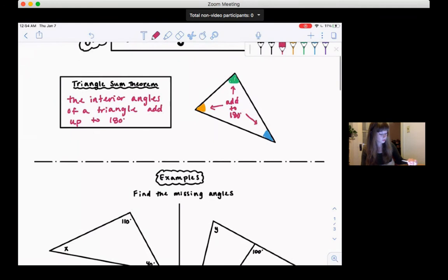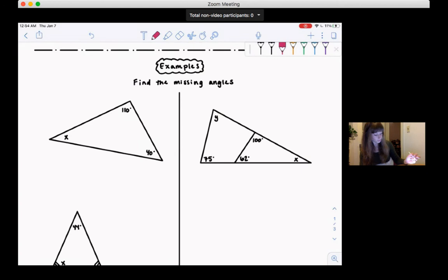Okay, so that's a pretty simple fact. We're going to use that to do a couple examples. So we're going to find the missing angles. This first one, we have a triangle. We're given two of the angles, and we want to find the third angle. So we're going to use the Triangle Sum Theorem. We know that all three of these angles have to add to 180.